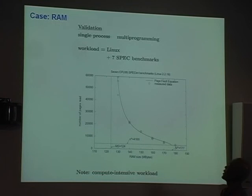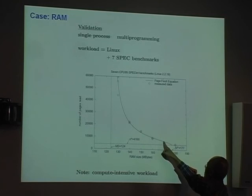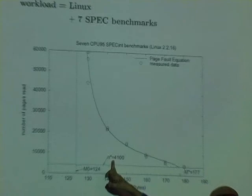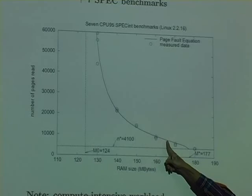Let me show you the data. We ran seven SPEC benchmarks on Linux. This is not a simulation — we actually measured the page I/O and changed the RAM size. The equation gives a pretty good fit for the data. This is the horizontal asymptote N*, the vertical asymptote M0, M* is the maximum memory, and this particular curvature is specified by N0.